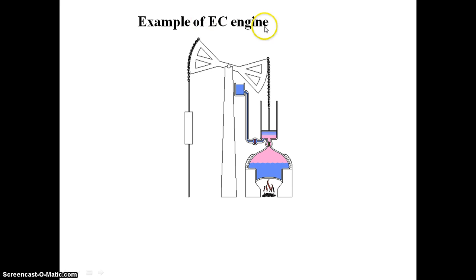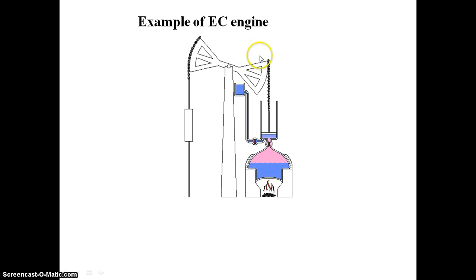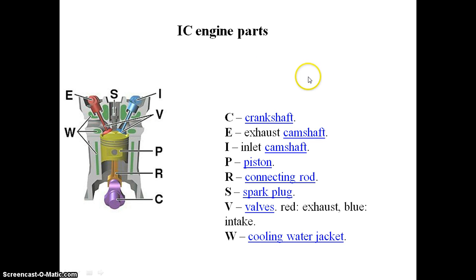This is one example of the external combustion engine. Here we can easily see that the combustion is happening outside of the system, which is why it comes under the external combustion engine. Now in the internal combustion engine, as shown in this example, the combustion takes place entirely inside the cylinder. That is why it is called the internal combustion engine.